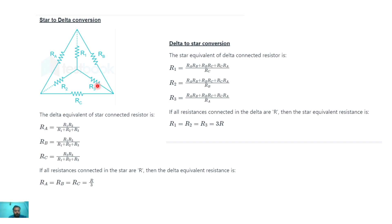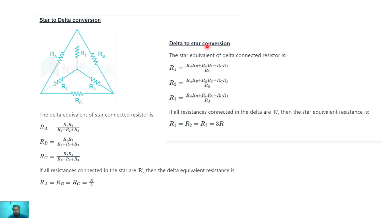Similarly, Rb can be calculated as R1·R3 / (R1 + R2 + R3), and Rc is equal to R2·R3 / (R1 + R2 + R3). If all the resistances connected in a star are R, then the delta equivalent resistances will be Ra = Rb = Rc = R/3.